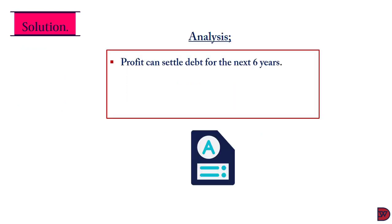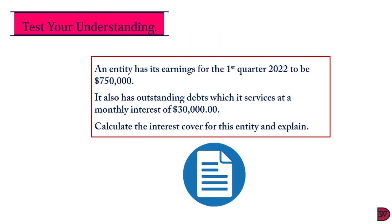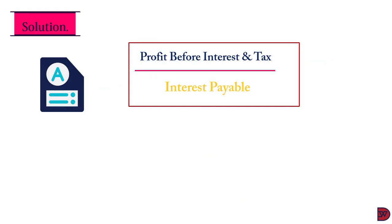When we analyze this, it says that the profit can settle the interest on the outstanding debt for 6 years — based on the annual frequency of the calculation. It also means that the debt is comfortably within the business's reach, and the business is highly solvent, because for existing profit to be able to pay interest on outstanding liabilities for six years is a very good position to be in. Let's test our understanding again. An entity has earnings for the first quarter of 2022 of 750,000. It also has outstanding debt which it services at a monthly interest of 30,000. We need to calculate the interest cover for this entity and explain.